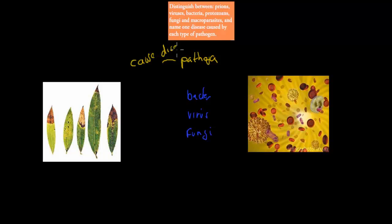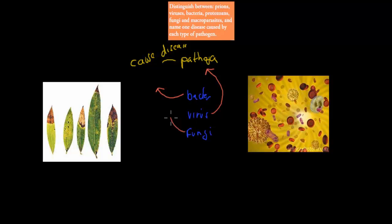Now the word pathogen is quite general. That pathogen can be divided into other kinds of things which cause disease. For example, a bacteria which causes disease is a pathogen. A virus which causes disease — most viruses do cause disease — are pathogens. There are some fungi, not all fungi, that cause disease, and they are pathogens. So in this video we are going to cover all the different things which can be a pathogen.